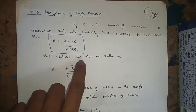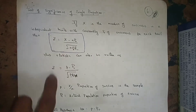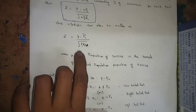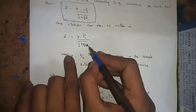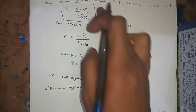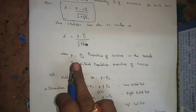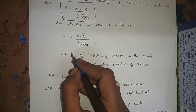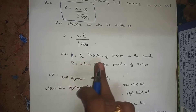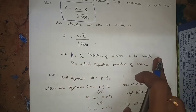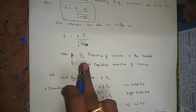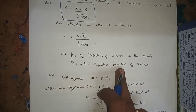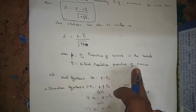This test statistic can also be written as z = (p − p₀) / √(p₀·q₀/n), where small p = x/n is the proportion of success in the sample, and capital p₀ is the actual population proportion of success.